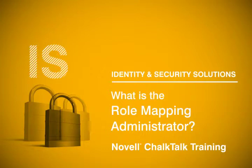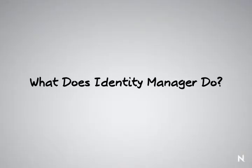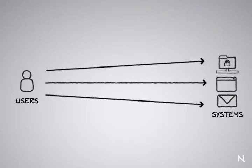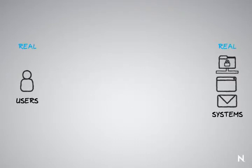Let's begin our discussion about the Role Mapping Administrator by first looking at what Identity Manager does. Identity Manager allows us to take users and map them to the different identities or accounts they have in different systems. These are the real things we have to deal with, and we ultimately create this relationship or link between them.